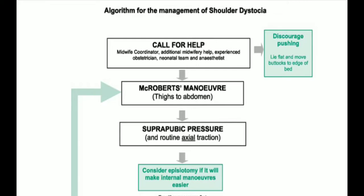In this short video I would like to explain the algorithm for the management of shoulder dystocia. This algorithm has been taken from the RCOG guideline on shoulder dystocia. Like in any emergency, the first step is to call for help — alerting everyone nearby, including the midwife coordinator, additional midwives, an experienced obstetrician, the neonatal team, and an anesthetist.